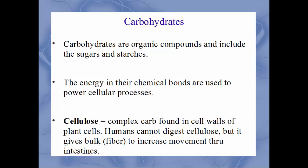An example of a complex carbohydrate that humans can't break down is cellulose. Cellulose is found within the cell walls of plant cells. Even though we can't digest it as humans, it gives bulk to your intestines to help you have bowel movements more often. This is what fiber is — that's why fiber makes you go to the bathroom more frequently, adding bulk to the feces as it forms.